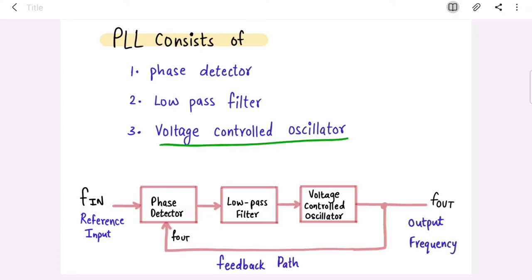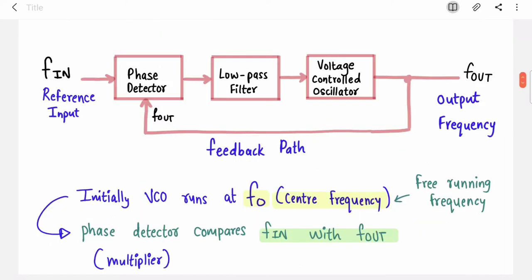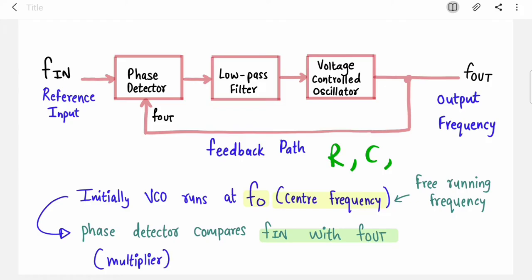The PLL block diagram consists of three parts: a Phase Detector, a Low Pass Filter, and a Voltage Controlled Oscillator (VCO). The VCO is just an oscillator whose frequency is controlled by an input voltage — whatever input voltage it gets from the LPF, it changes its frequency. If you increase the input voltage, the frequency increases; if you decrease it, the frequency decreases. Initially, when no reference input is applied, the VCO runs at its center frequency or free-running frequency, which is decided by external R and C components.